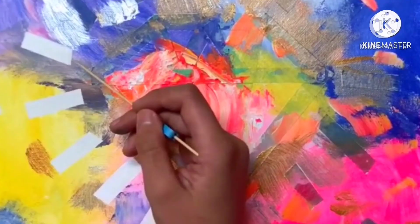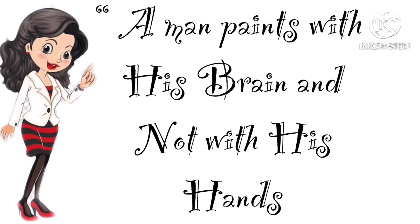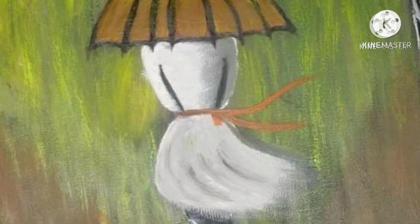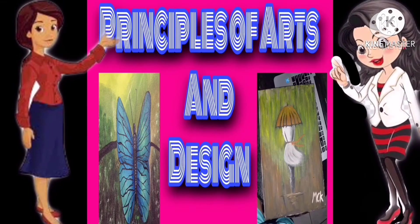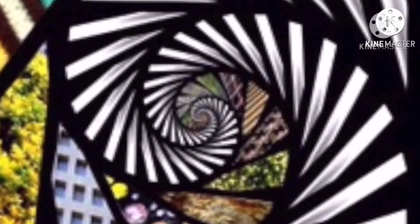Now we can create interesting artwork through various activities. 'A man paints with his brain and not with his hands' — this important statement reflects that art is not merely a product of a skillful hand, but of a creative mind that expresses experiences, visions, and adventures that inspire feelings. The principles of arts and design — number one is rhythm. Rhythm is the repetition of the elements of art and pattern. Rhythm is made when something in the artwork repeats itself to create a pattern. Notice how the artist uses a series of black and white shapes to create a spiral pattern in this artwork.